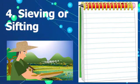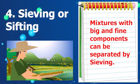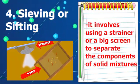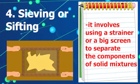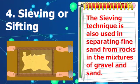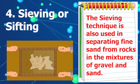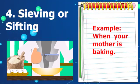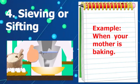Number four: sieving or sifting. Mixtures with big and fine components can be separated by sieving. This involves using a strainer or a big screen to separate the components of solid mixtures. The strainer allows only fine particles through and prevents the larger ones. Sieving is used in separating fine sand from rocks in a mixture of gravel and sand. Another example is when your mother is baking — she uses a strainer to separate fine and big particles of flour or sugar.